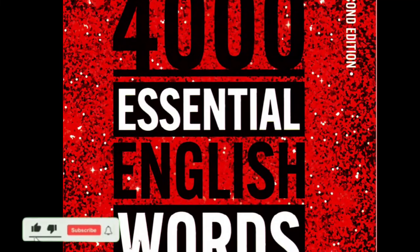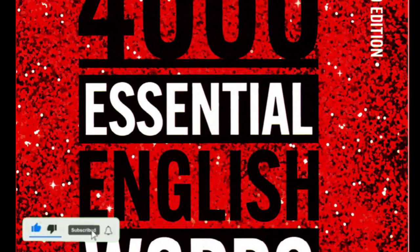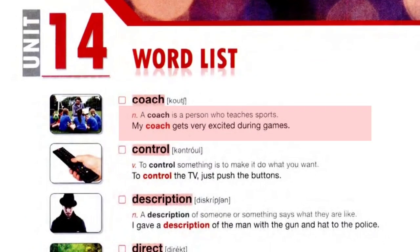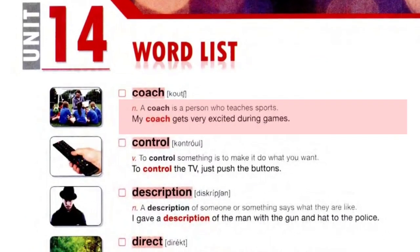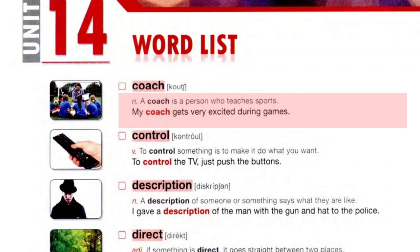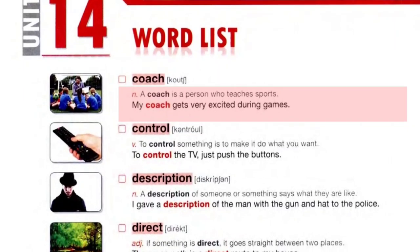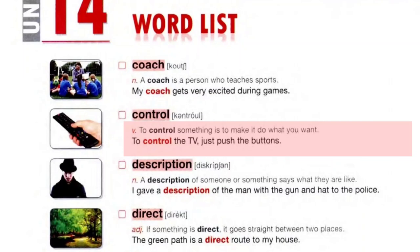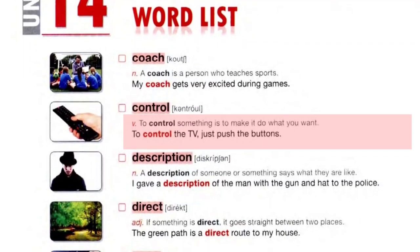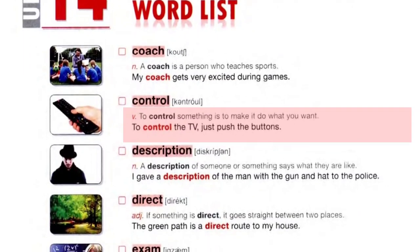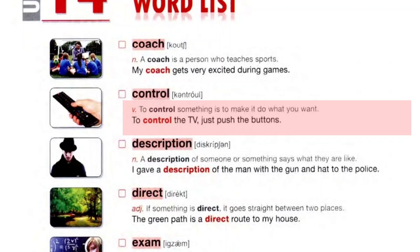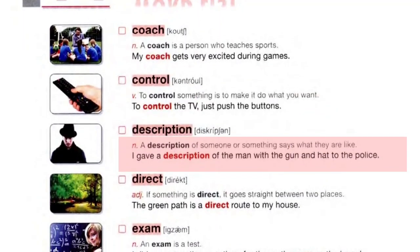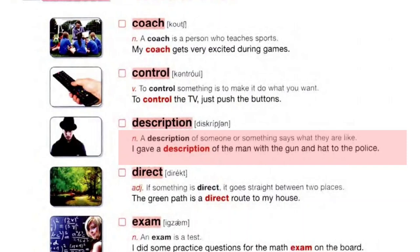Learn English language with 4,000 essential words, Unit 14 word list. Coach: a coach is a person who teaches sports. My coach gets very excited during games. Control: to control something is to make it do what you want. To control the TV, just push the buttons.